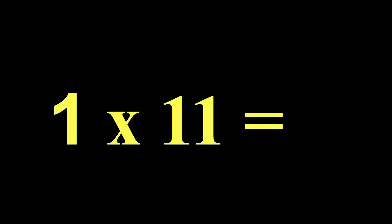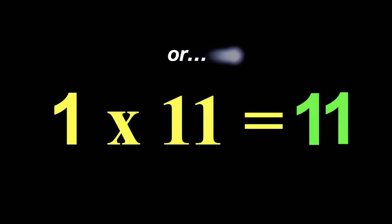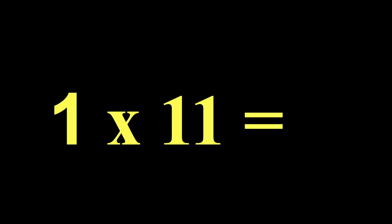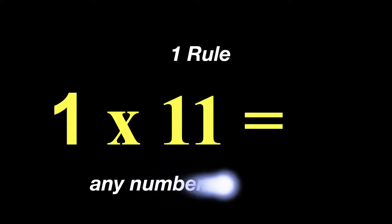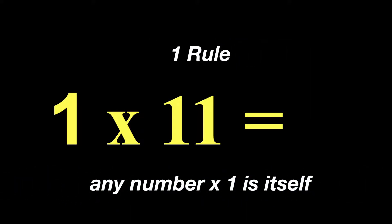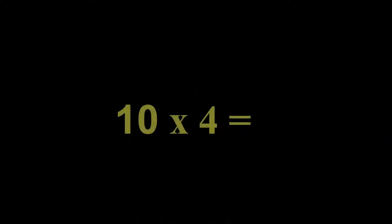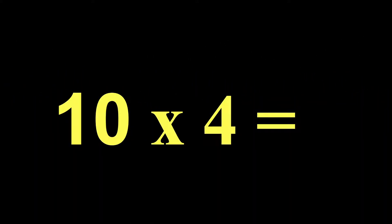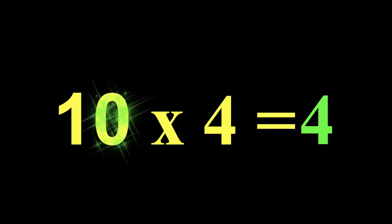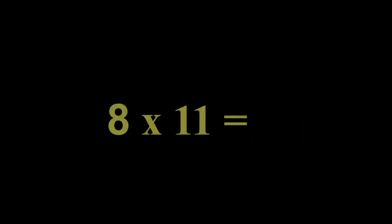1 times 11 — the other number for the 11 rule, we are going to take that and double it. Or you could really just use the 1 rule, which is any number times 1 is itself. So the 11 would just stay the same because of the 1 rule — either way, whichever way you like to do it. 10 times 4 would be our 10 rule, so we take our other number, add a 0, and 10 times 4 is 40.